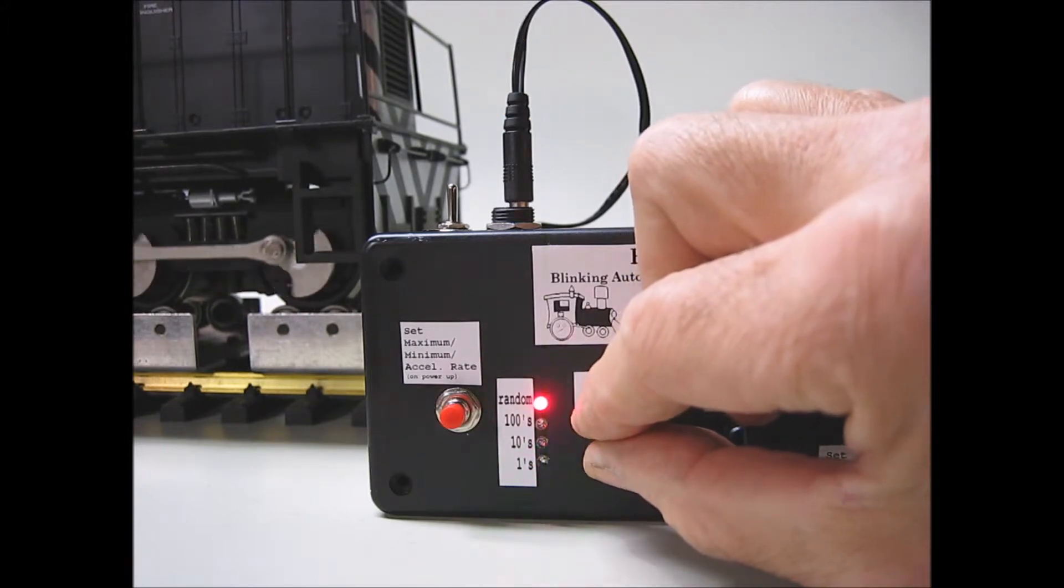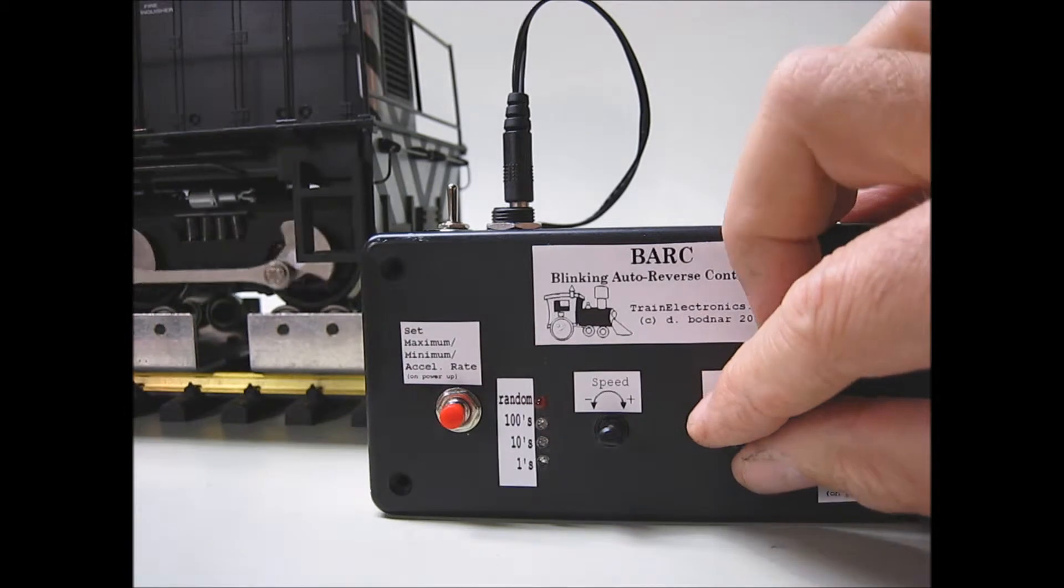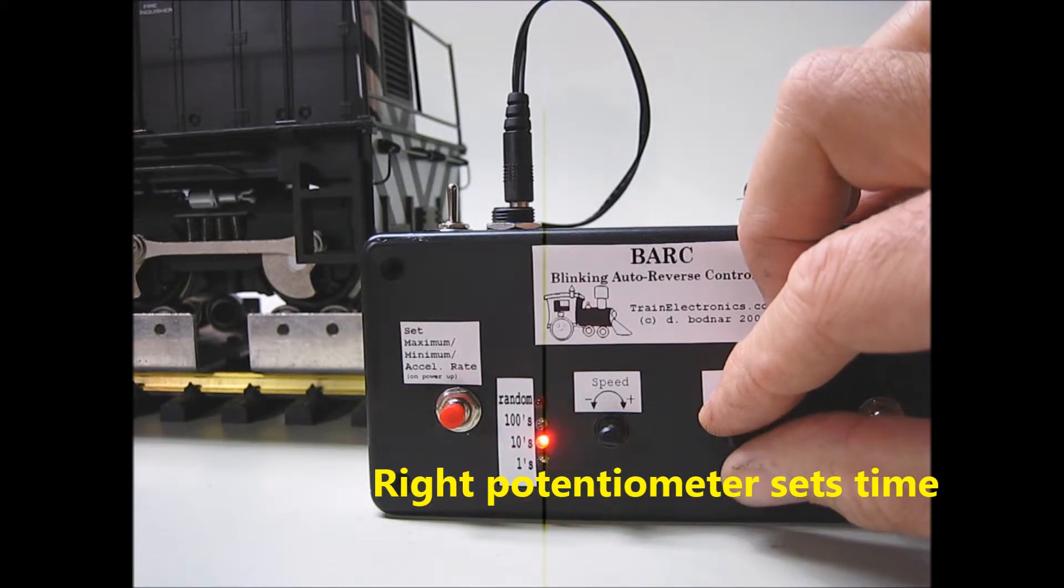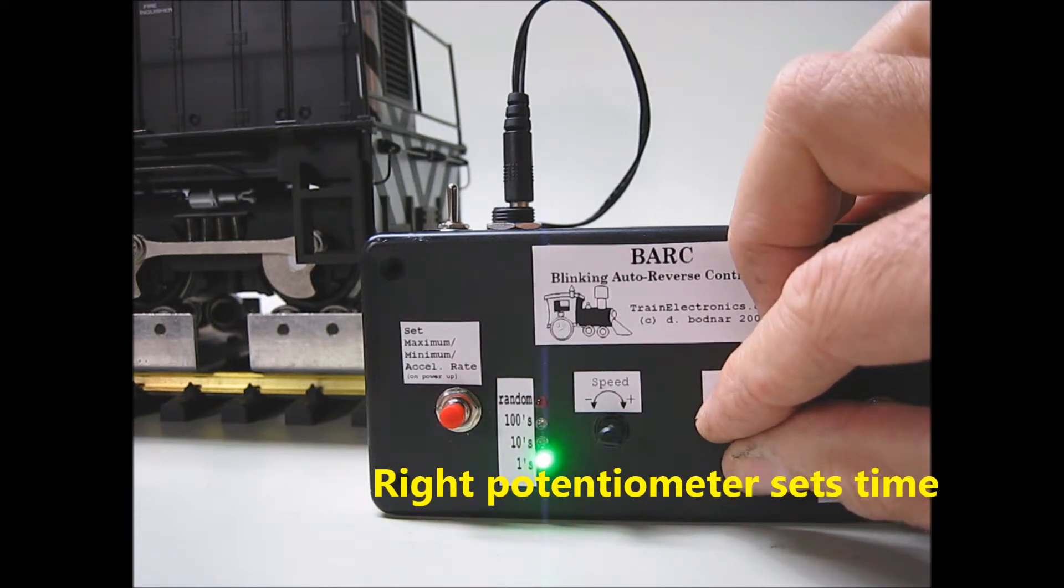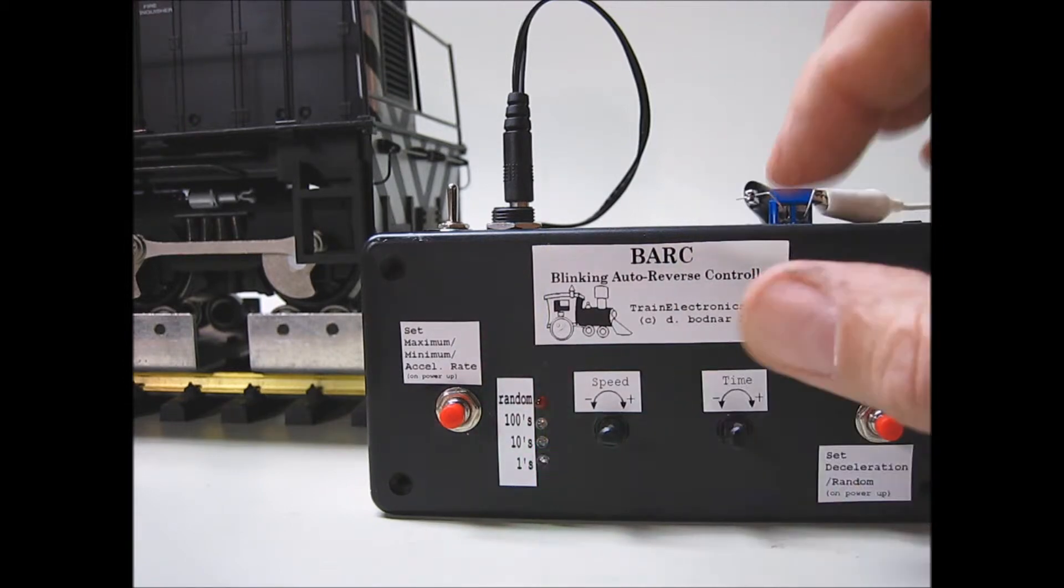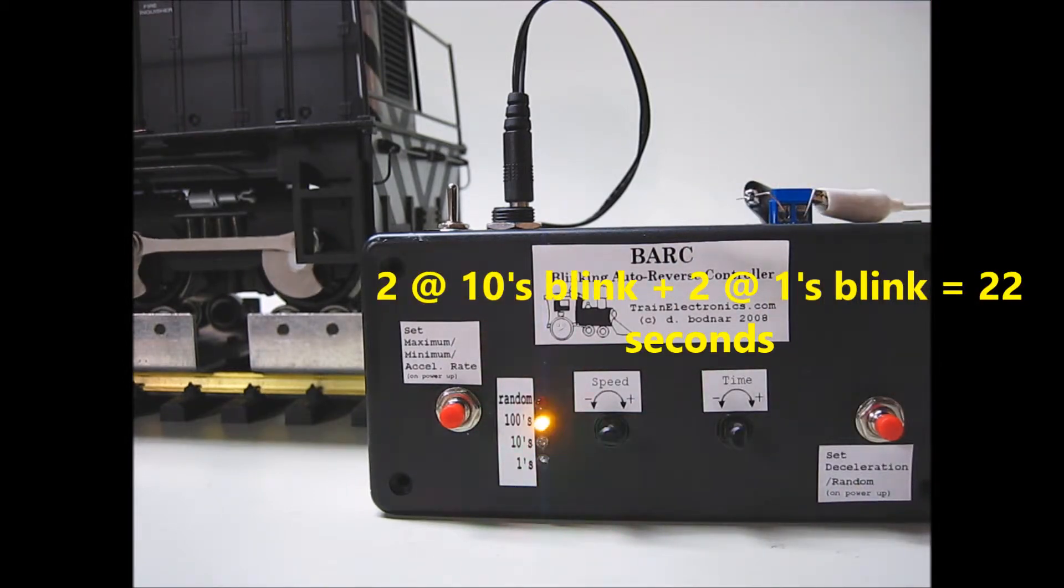Now what I'd like to do is change the time, and I'd like to get it to about 20 seconds. One, two, three - that's too much. One, two. One, two. That's 22 seconds, that'll be fine. That'll blink three times and then it's going to start to accelerate. There it goes.